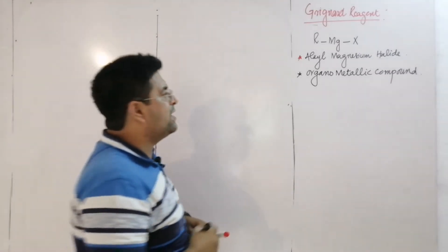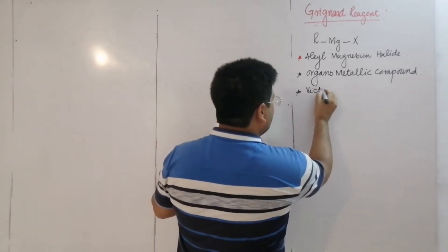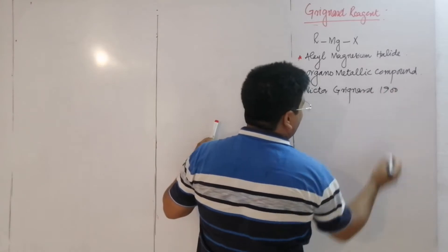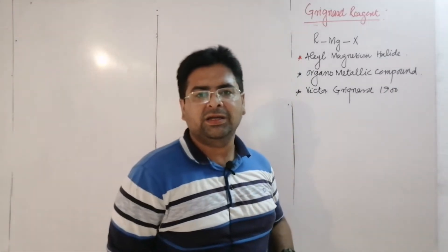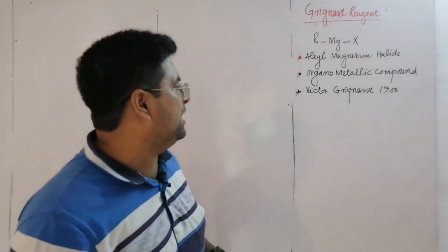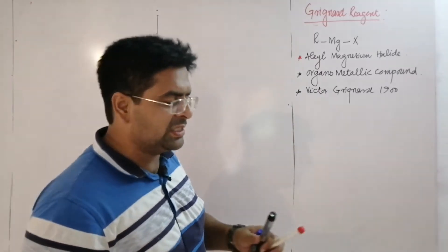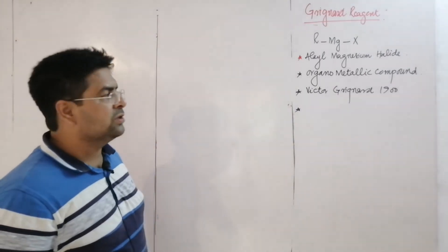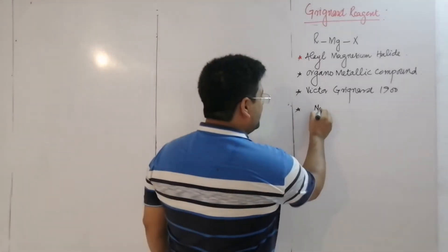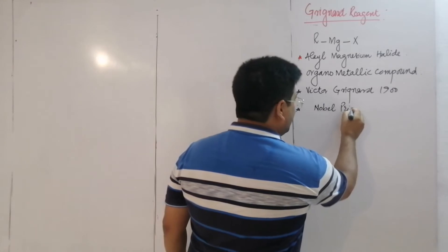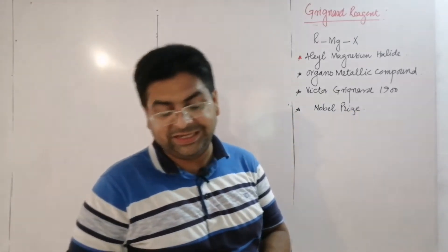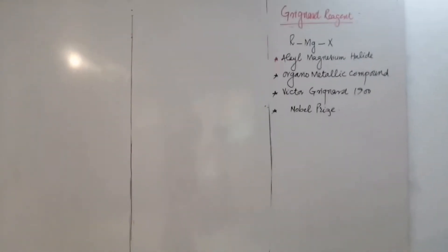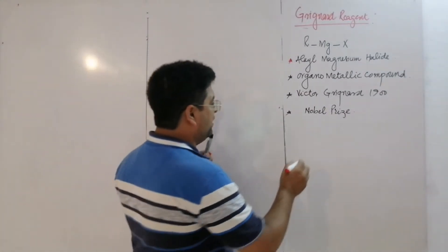This was discovered by Victor Grignard in 1900. Dear students, this is highly reactive and therefore very useful in industries. Using it, we can prepare almost all classes of organic compounds. On this basis, Victor Grignard was awarded the Nobel Prize in Chemistry for the discovery of Grignard Reagent.